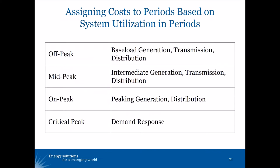I want to talk about assigning costs to the time of use period based on how the system is utilized in different periods. One way is in the context of an embedded cost of service approach, where off-peak prices include the cost of base load generation, the transmission necessary to connect that base load generation to the system, and the distribution backbone necessary to make power available at any hours.